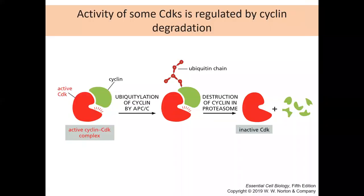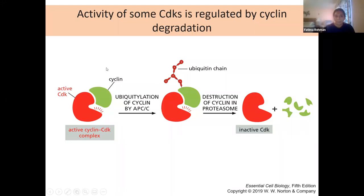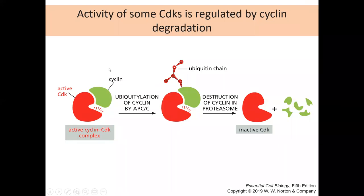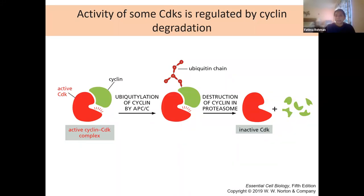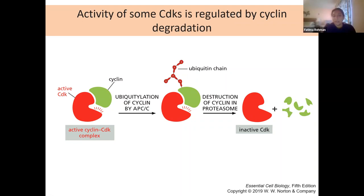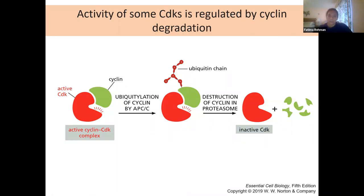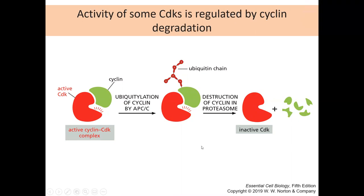Those inhibitory phosphorylations are removed through an activating phosphatase called CDC25, which removes those phosphates and then activates the complex for mitosis. Because mitosis is such an important step, it has extra layers of regulation to make sure the cell doesn't prematurely enter mitosis. Certain environmental cues can trigger Wee1 production to inhibit mitosis, even at the G2 phase.